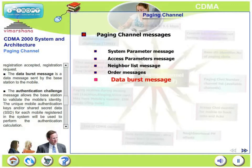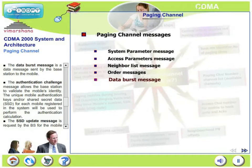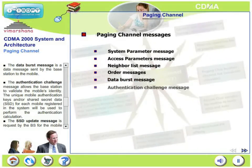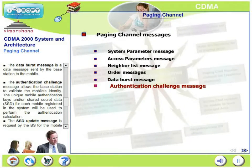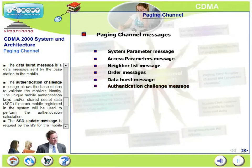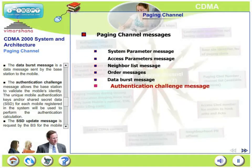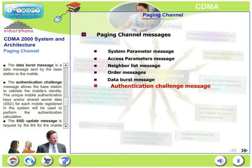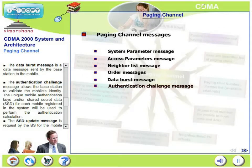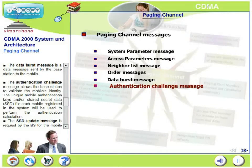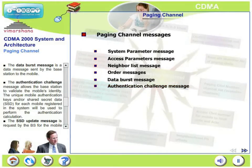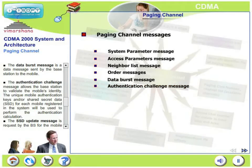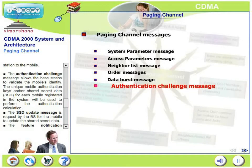The data burst message is a message sent by the base station to the mobile. The authentication challenge message allows the base station to validate the mobile's identity. The unique mobile authentication keys and/or shared secret data for each mobile registered in the system will be used to perform the authentication calculation.